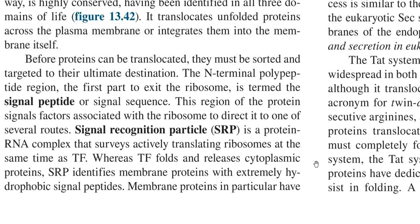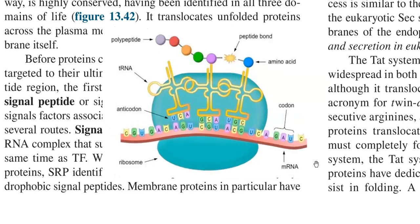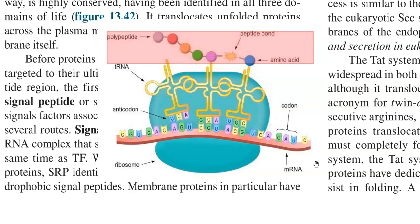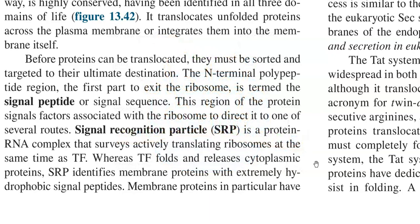Before proteins are translocated, they must be sorted out. Proteins are formed during the translation process, where ribosomes help in translating mRNA into protein. These proteins need to be sorted and targeted to different destinations in the cell. In any protein, as you may know from biochemistry, it will have an N-terminal and a C-terminal — that is, amino acids in the protein will have an N and C-terminal.